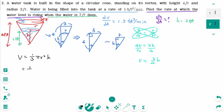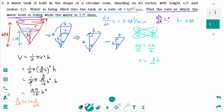Back to the original formula: V equals (1/3)πr²h, substituting r equals (3/4)h gives V equals (1/3)π times (9/16)h² times h, which simplifies to 3π/16 times h³. Differentiating implicitly with respect to t: dV/dt equals (3π/16) times 3h² times dh/dt.